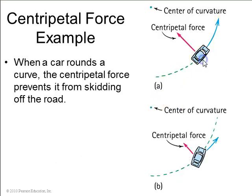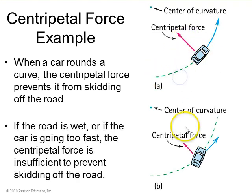Example, here you've got a car going around a curve. The centripetal force is what keeps it on the road. If the road is wet or slippery, the centripetal force is less and so it is not enough to keep the car on the road and the car will slide off into the ditch.